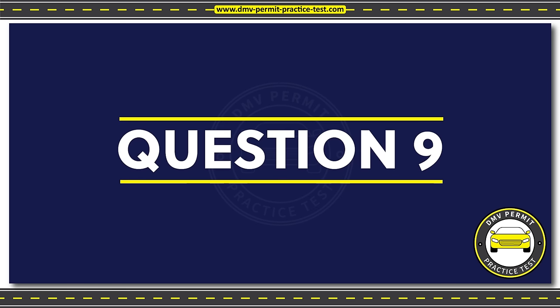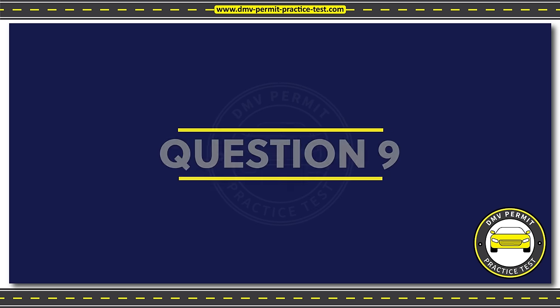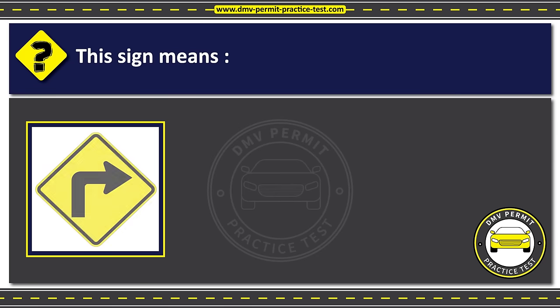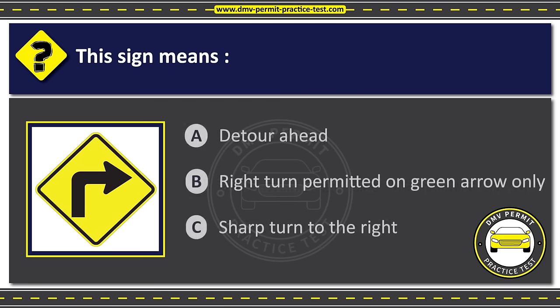Question nine. This sign means Option A: Detour ahead. Option B: Right turn permitted on green arrow only. Option C: Sharp turn to the right. The correct answer is Option C: Sharp turn to the right.